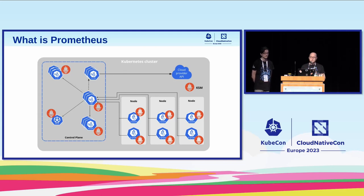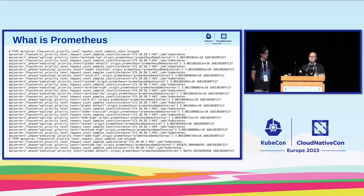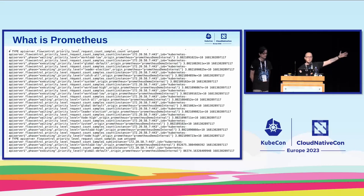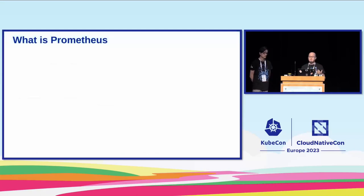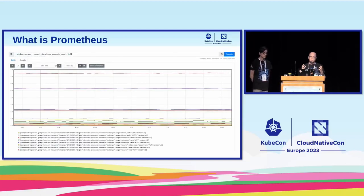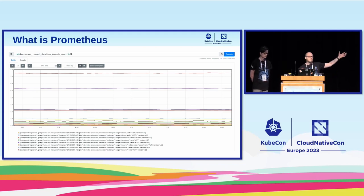Prometheus uses a human-readable format called OpenMetrics that you can access at any of these endpoints of Kubernetes elements that are exposing metrics. You can see the name of the labels, the value, and so on. Prometheus reads every 60 seconds from these endpoints, stores the data, and then through a query language called PromQL, you can query it as a database and make aggregations, maps, and different manipulations of data to get different results.